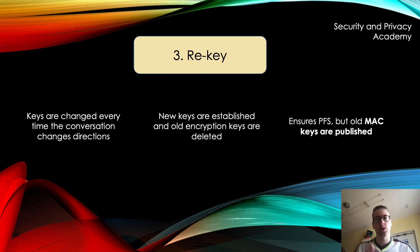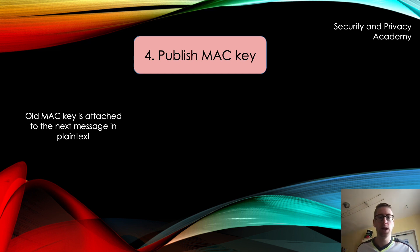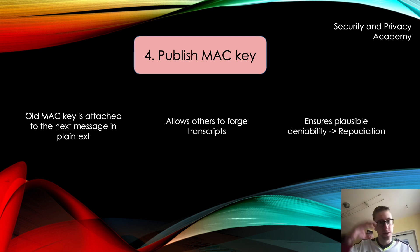However — and this is very important — old MAC keys are not deleted, because we need them in order to forge messages. Instead, they are published in the next step, called Publish MAC Key. They are published by being attached to the next message in plaintext, so the MAC key is available to everyone. As previously stated, this allows an adversary to forge transcripts of whole conversations, thus enabling the conversation partners to plausibly deny that it was their message. This is linked to the protection goal of non-repudiation, which in OTR's case is basically turned on its head, as OTR's purpose is to allow repudiation of the conversation partners.